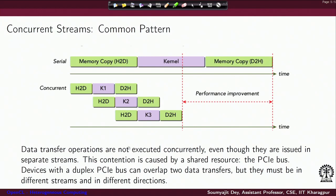We also mentioned that in case we have a device where we have support for duplex PCI bus, then we can overlap two data transfers happening in different directions. Assuming a normal PCI express bus, we can overlap execution in the GPU device along with a one-sided data transfer.